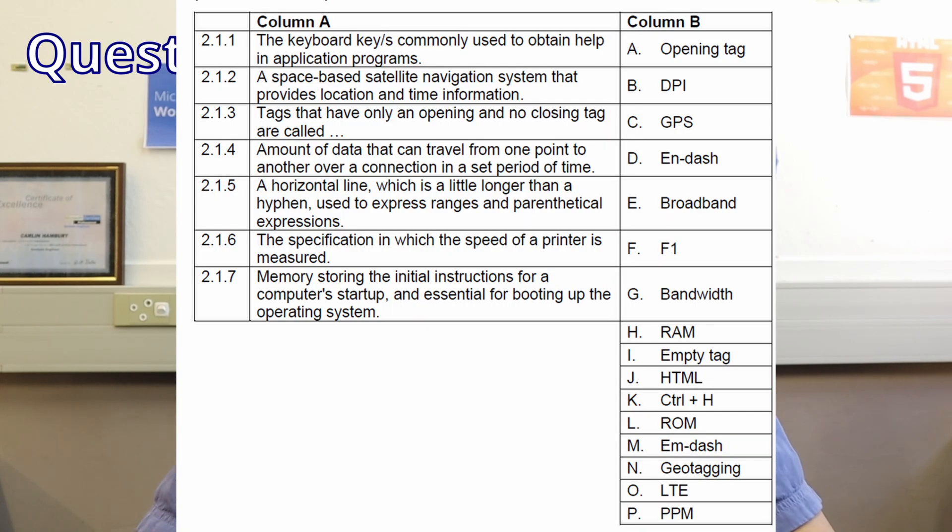Moving on to question two — please remember, what I'm giving you is not a blueprint for the exact order, but this is generally what I've seen in many papers. Question two is usually the match the column. You need to know your terms — either acronyms or general computing terms. Go through column B first, check out all the terms before you even look at the definitions, then match them.